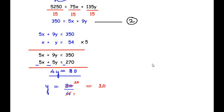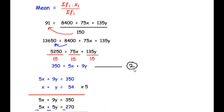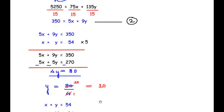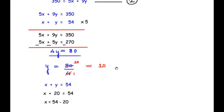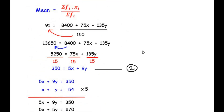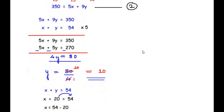Substituting y = 20 into equation 1: x + 20 = 54, so x = 34. Therefore x = 34 and y = 20, found by using the given mean value and solving simultaneous equations. I hope you understood all the steps. If you know any other way of solving these examples, do comment below. If you are liking my videos, like, share and subscribe to my channel. Thank you for watching.